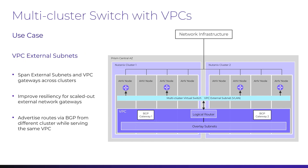With Nutanix Flow Virtual Networking, we're not just talking about extending a subnet. We've advanced to a point where we can stretch an entire VPC across several clusters within a single availability zone. With the new multi-cluster virtual switch, we can do the same for the VPC external networks. Now, the VPC external subnet, which is used for communication to and from a VPC, can actually span multiple clusters when the network is deployed using this multi-cluster virtual switch.